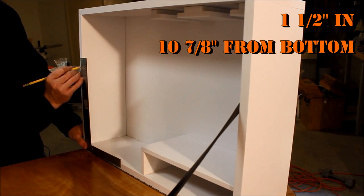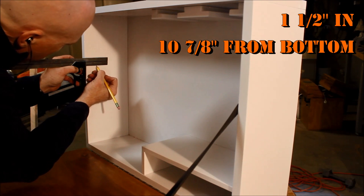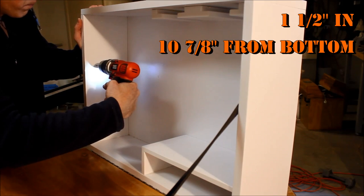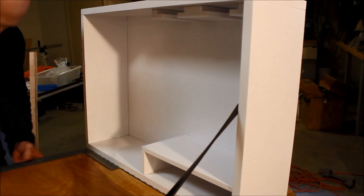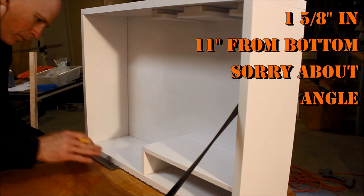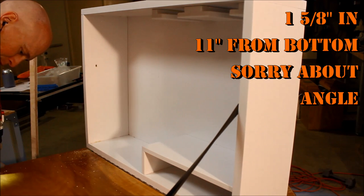The carcass mounting point is 1.5 inches from the edge and 10.7 inches from the bottom. The mounting point on the front is 1.5 inches in and 11 inches from the bottom.